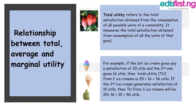Let's illustrate it this way. For example, you decided to take some glasses of ice cream. You attach a unit to each cup. You take the first cup and attach a unit of 20, the second cup a unit of 16, and the third cup a unit of 10. The summation of all the satisfaction — 20 plus 16 plus 10 — gives us 46. So the total satisfaction derived from these different cups of ice cream is what we call total utility.